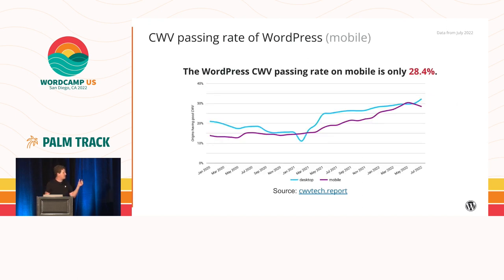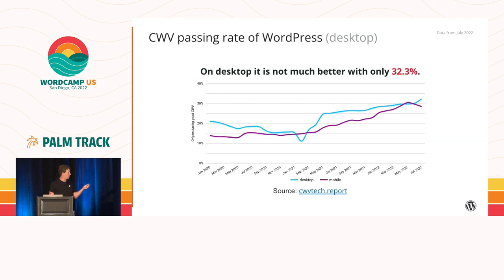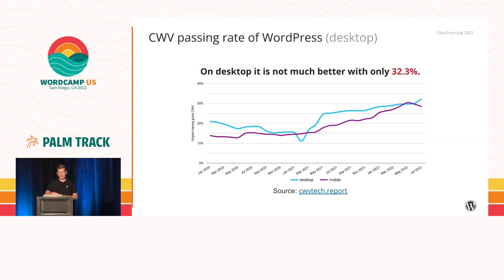LCP is also really the main metric that drags down the overall Core Web Vitals passing rate, which is only at 28.4% on mobile as of July this year. On desktop, it's only marginally better with 32.3%. This data is sourced from HTTP Archive and the Chrome UX report, both of which are public datasets that anybody can query. A good entry point is the cwbtech.report URL, which is essentially where all this exact data comes from.